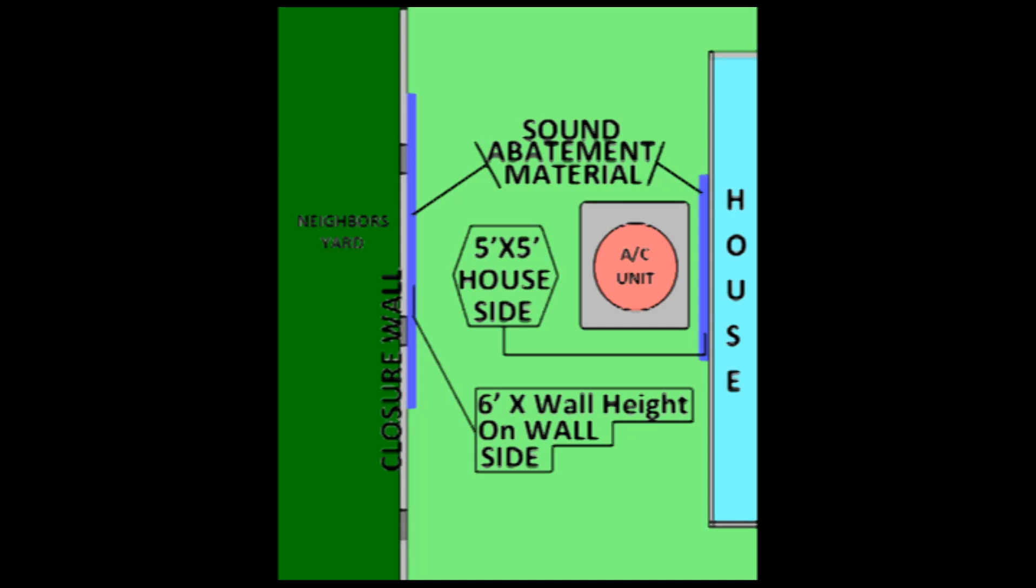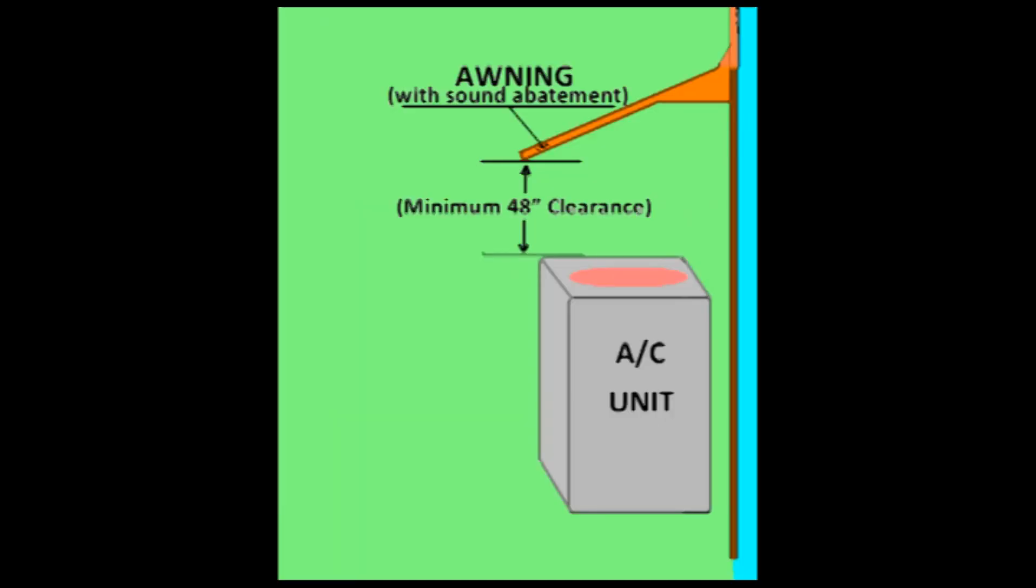To really cinch the deal, you can install an overhead abatement. But remember the pitfalls of air recirculation. If you're going to use this method, then remember to keep the awning at least 4 feet above the boisterous unit.